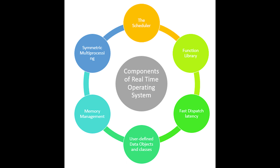Then we have memory management — this element is needed in the system to allocate memory to every program and is one of the most important elements of the real-time operating system. Then we have fast dispatch latency, which is the interval between termination of a task identified by the operating system and the actual time taken by the thread in the ready queue to start processing.